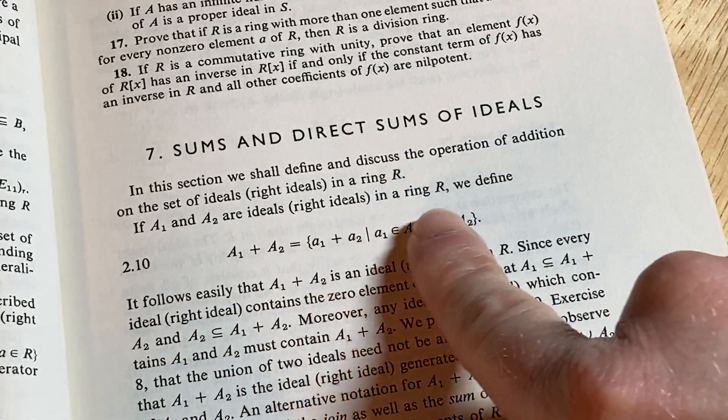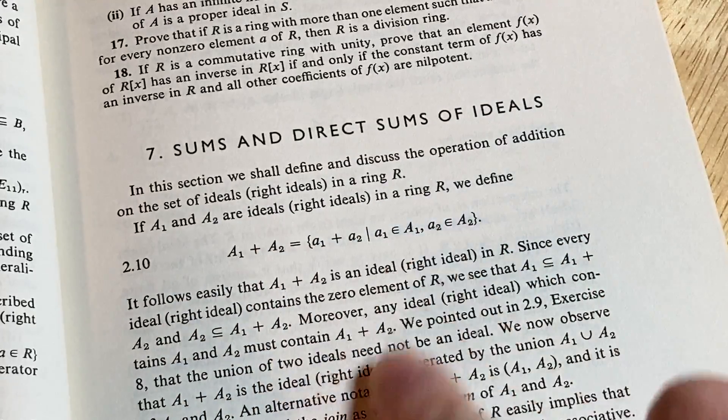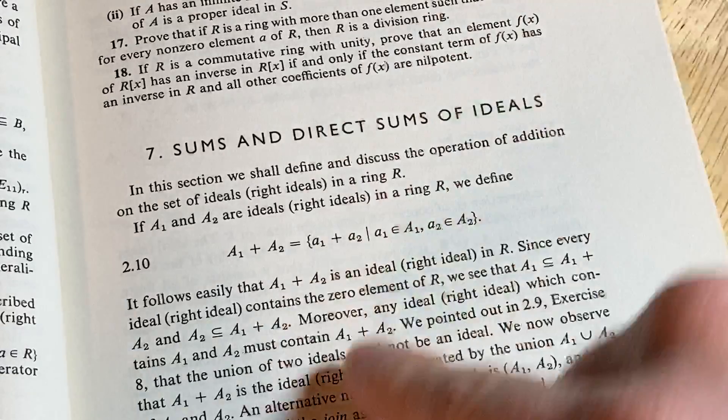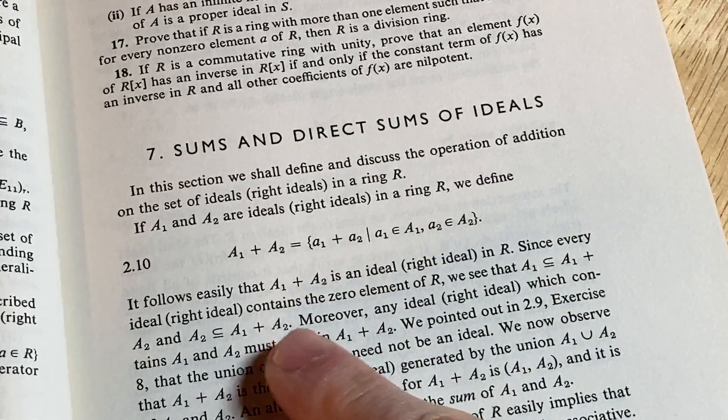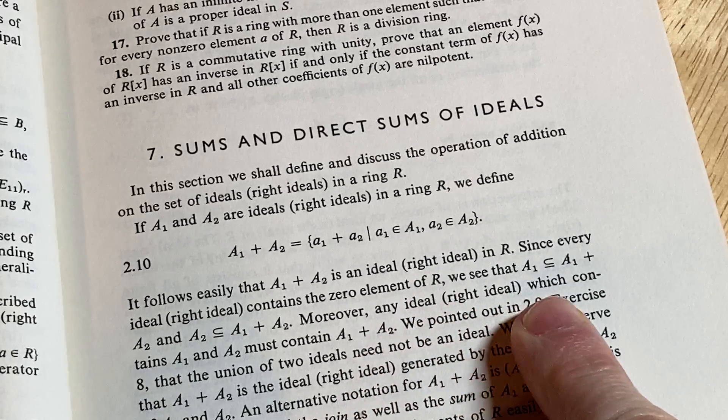So if we have two ideals in a ring R, we define their sum this way. Okay, okay, and it follows easily that the sum is an ideal, right, ideal in R, yep.